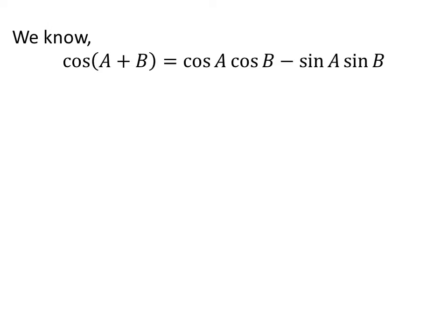We know the famous trigonometry identity cos(A + B) = cos(A)cos(B) - sin(A)sin(B).